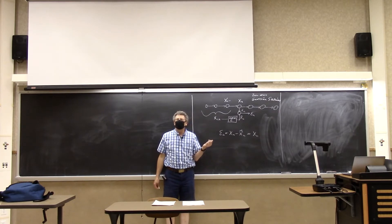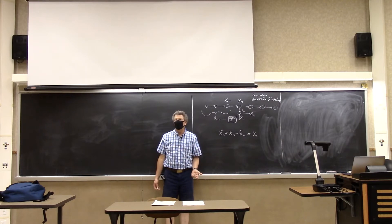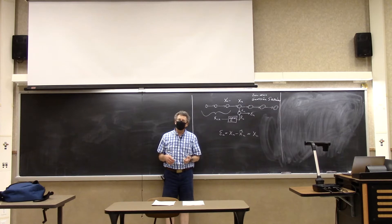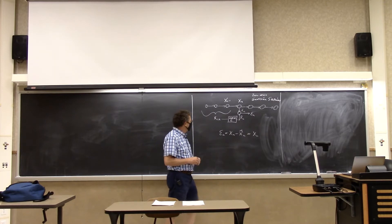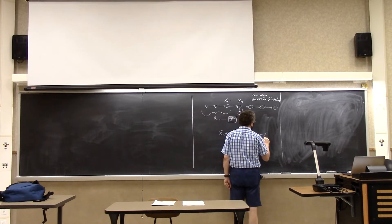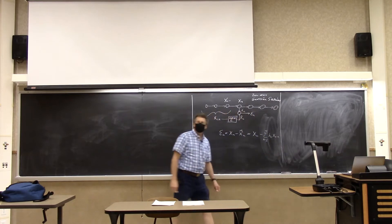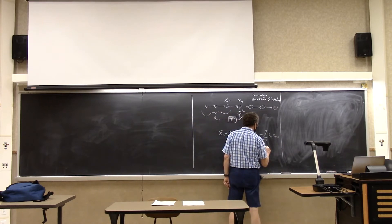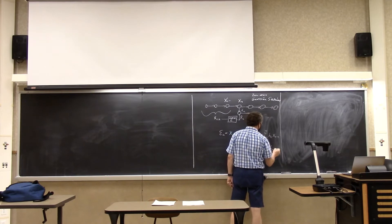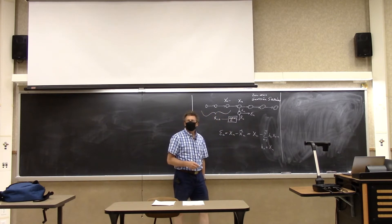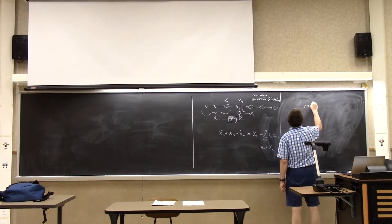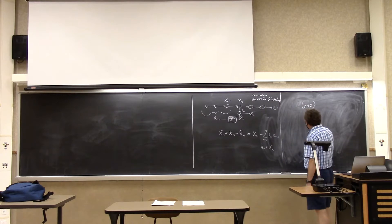Stationary here means wide-sense stationary or strict-sense stationary — since it's jointly Gaussian, they're the same. Wide-sense stationary means the mean and autocorrelation are not functions of time. Strict-sense stationary means the entire distribution is not a function of time. And since the mean and correlation define the distribution for a multivariate Gaussian, if those are invariant, all distributional properties are invariant.